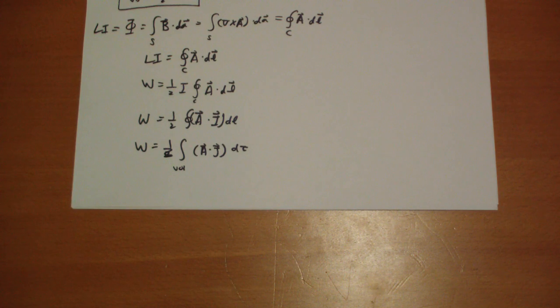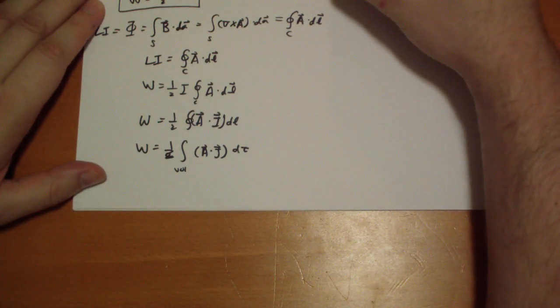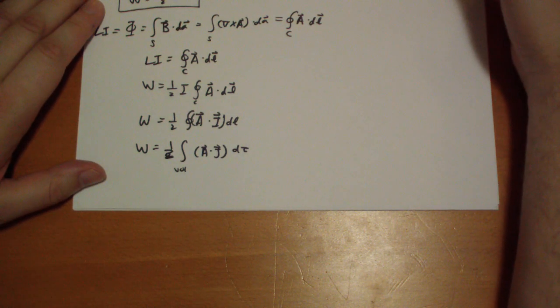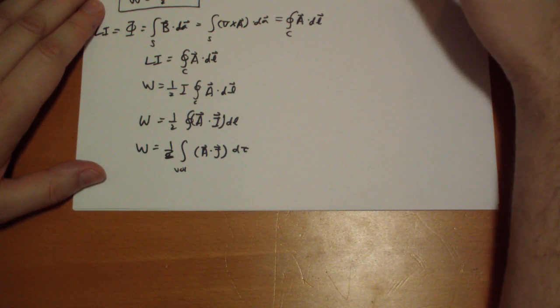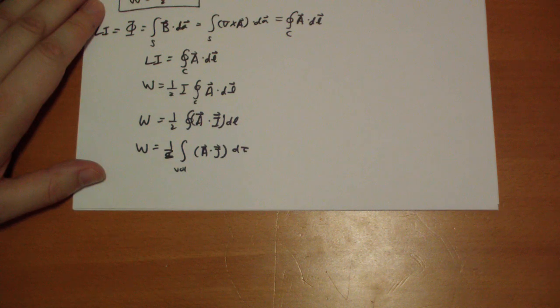Let's try to express it now completely in terms of the magnetic field. So we know that the curl of B, let's see, how does it go? Yeah, curl of B is mu naught J.